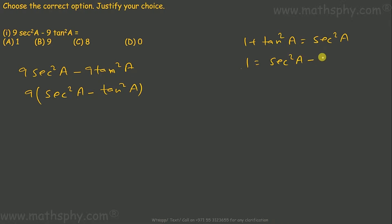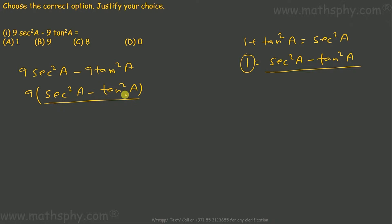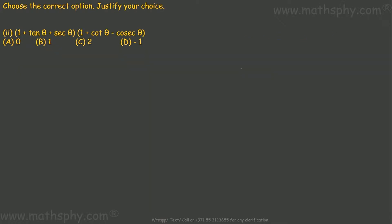In that case, 1 is equal to sec²a minus tan²a. So sec²a minus tan²a equals 1. What I have here is sec²a minus tan²a, which is 1, so 9 into 1 comes to 9. The correct answer is B. Next problem: 1 plus tanθ plus secθ, times 1 plus cotθ minus cscθ.